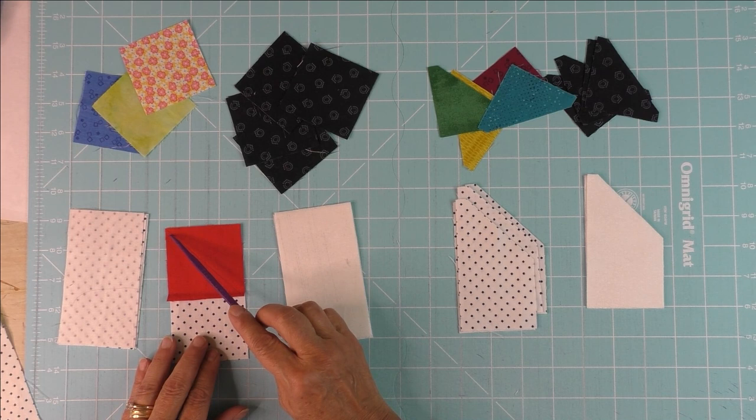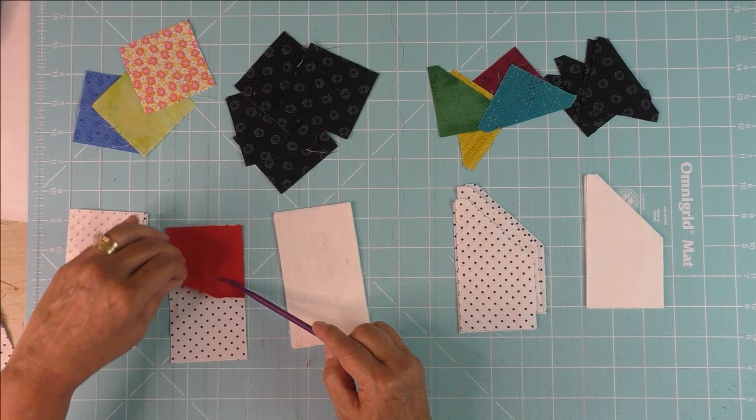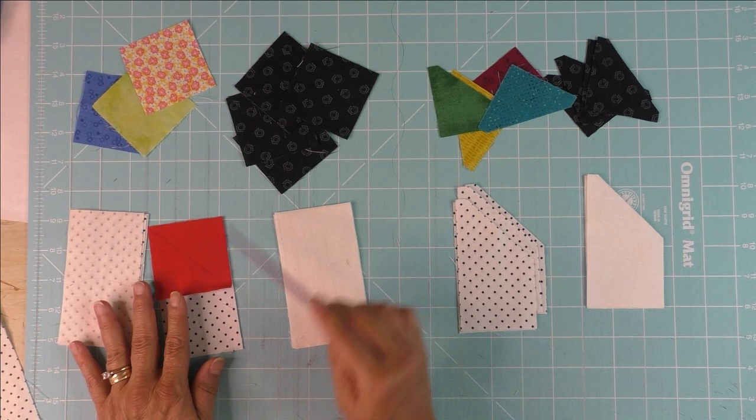You'll put it on the rectangle like this, then stitch on the diagonal line and trim this edge off. Then flip it and press it towards this direction, and I'll show you the steps for that.